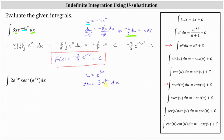Notice our integral has 2e to the 3x dx, not 3e to the 3x dx. Therefore, we'll divide both sides by 3 to solve for e to the 3x dx. Simplifying, we have 1/3 du equals e to the power of 3x times dx.